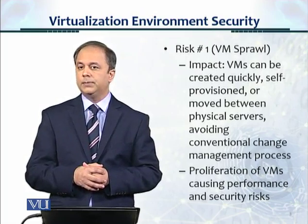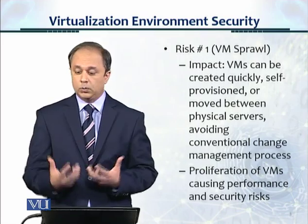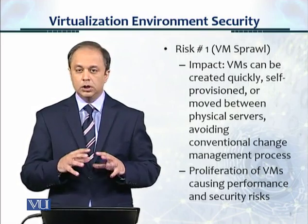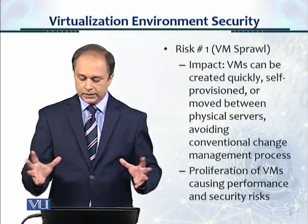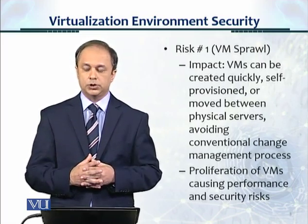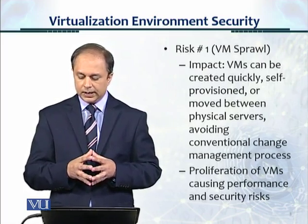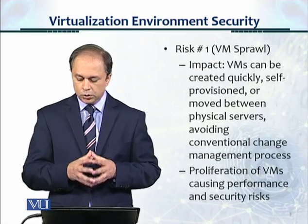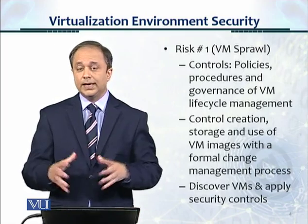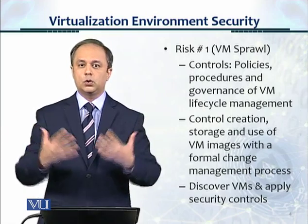Risk number one is VM sprawl. The impact is that VMs can be created very quickly, self-provisioned, or moved between physical servers, avoiding conventional, lengthy change management processes. This is what makes computing agile with virtualization. However, with the proliferation of VMs, this is causing huge performance and security risks — there is a sprawl, and controlling the security of all those VMs becomes a significant challenge.